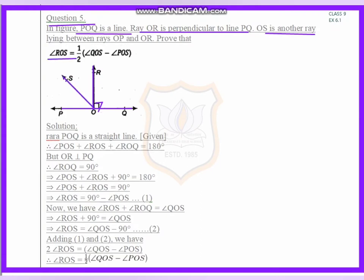We have to prove that angle ROS is equal to half of angle QOS minus angle POS. We have to prove this.